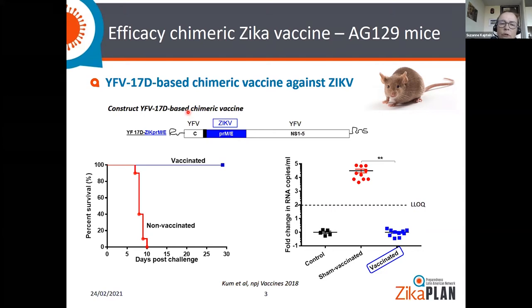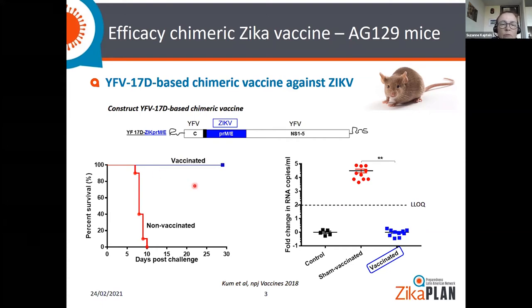When you vaccinate these AG129 mice with this chimeric yellow fever-based Zika vaccine, they are fully protected against a lethal challenge with Zika, as shown by the blue survival line. Viral RNA levels were also below the level of quantification.